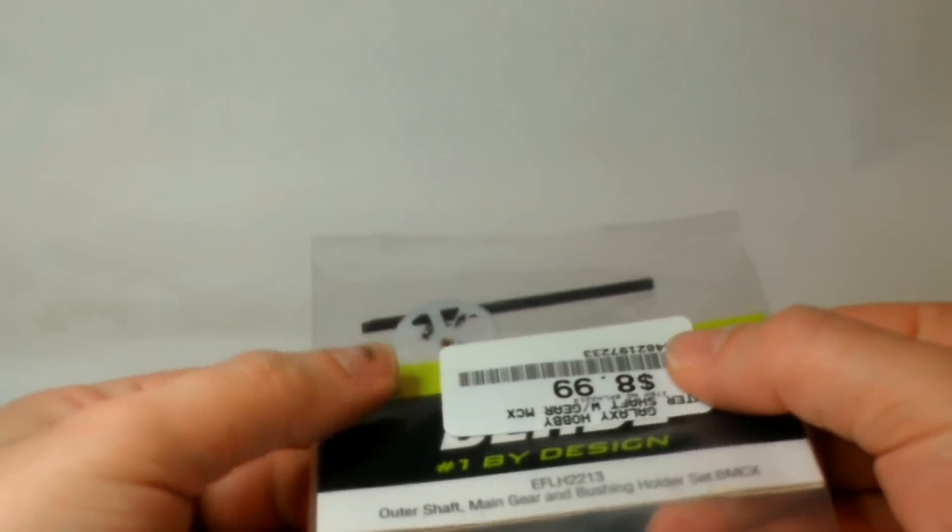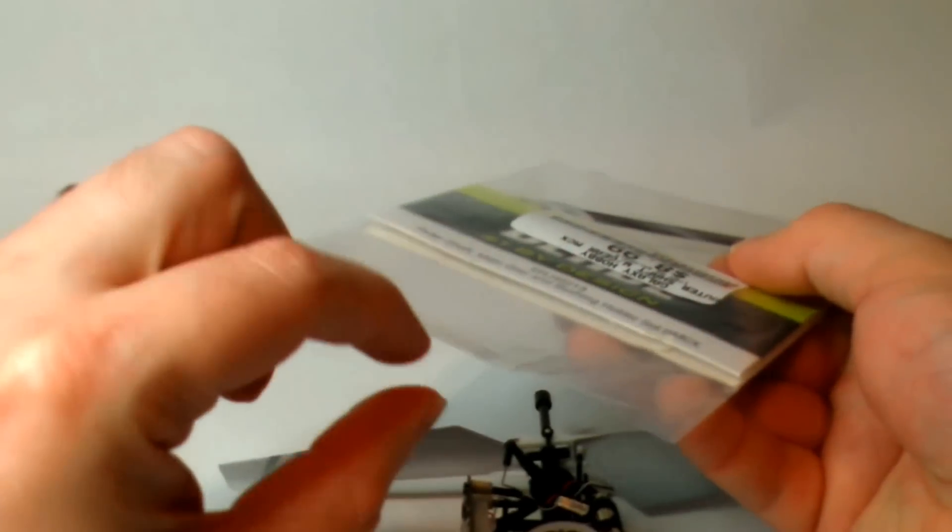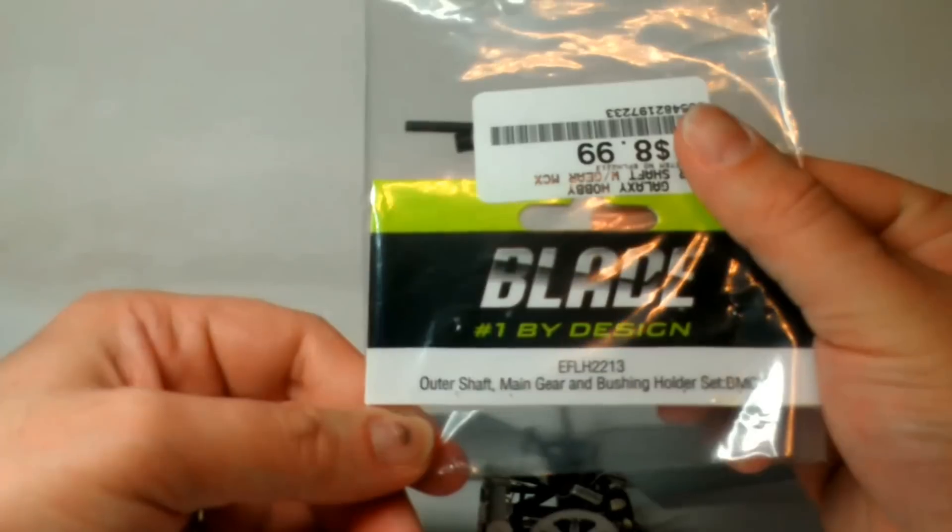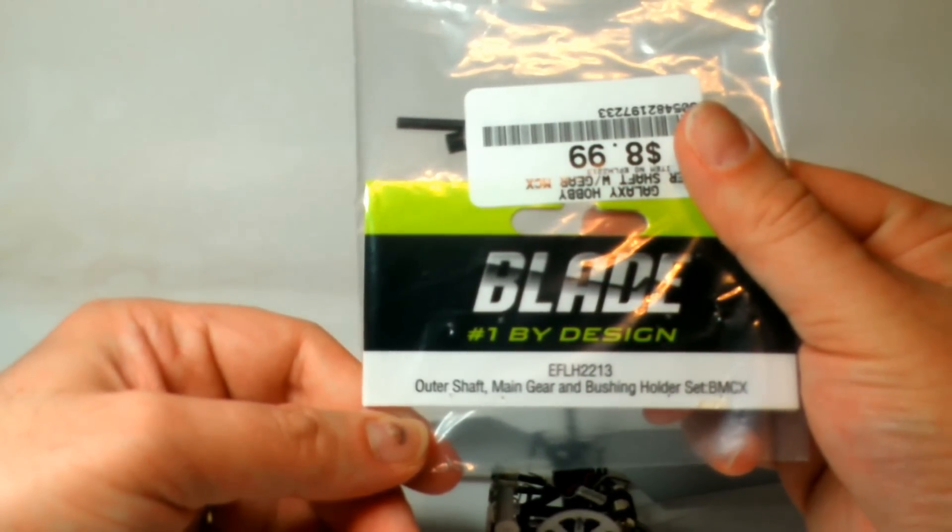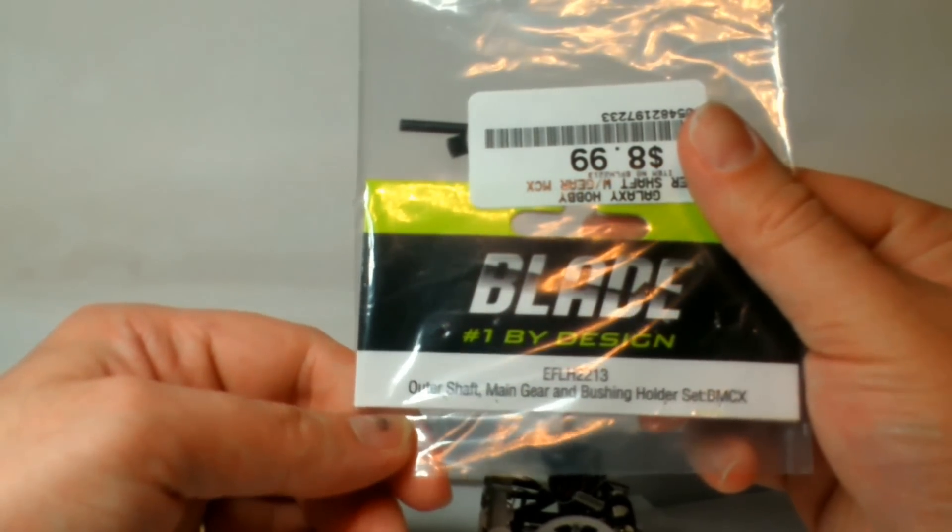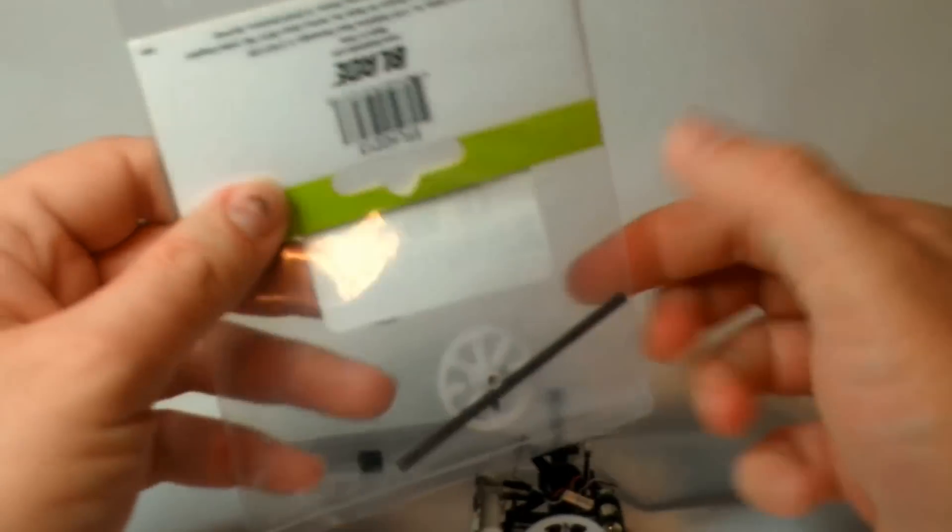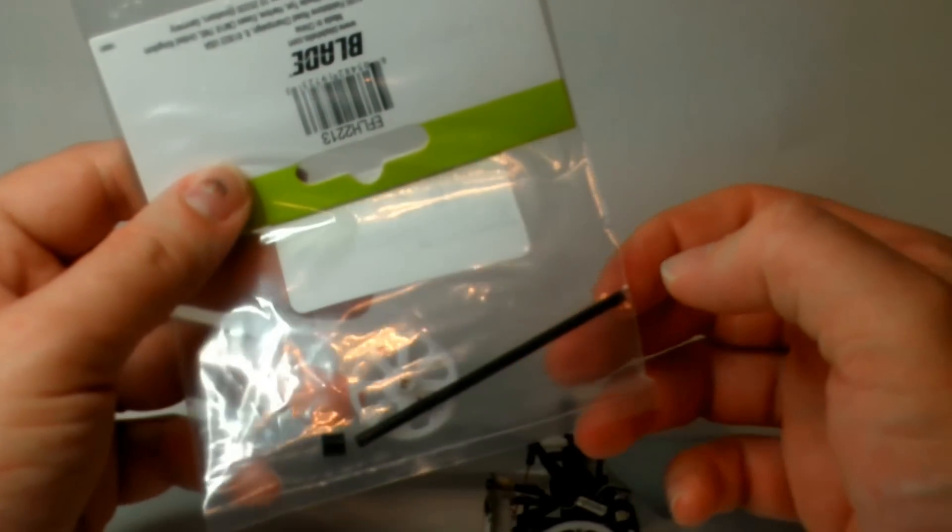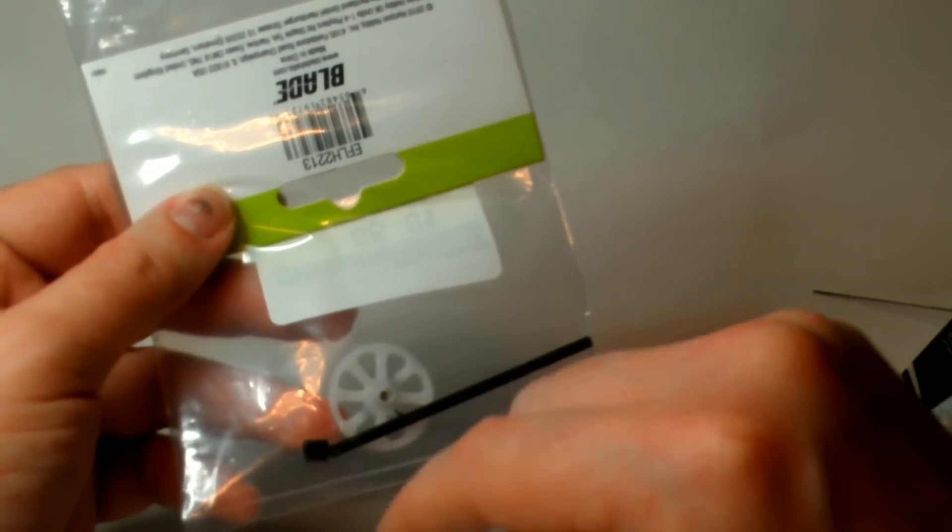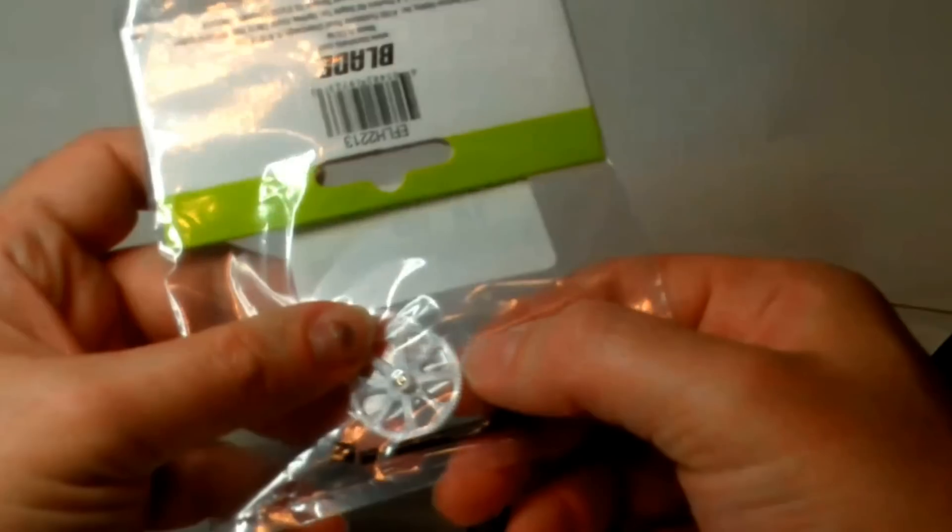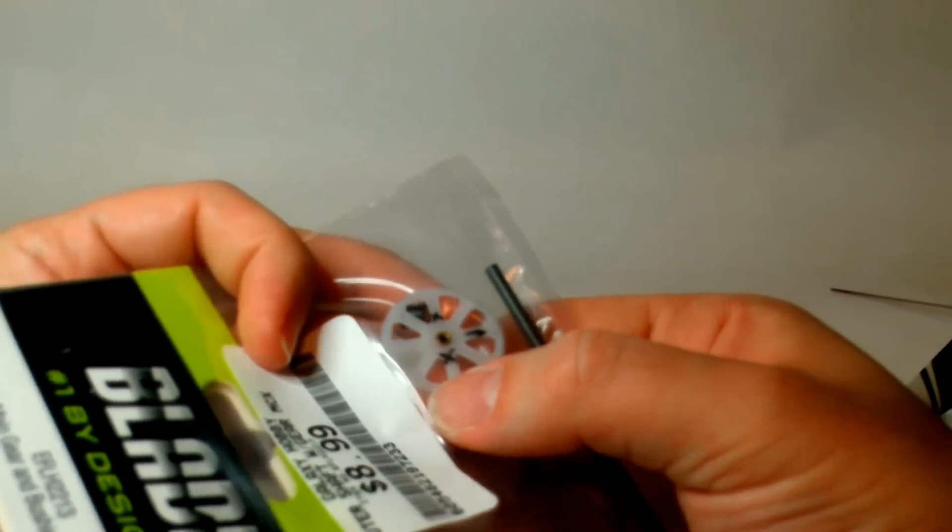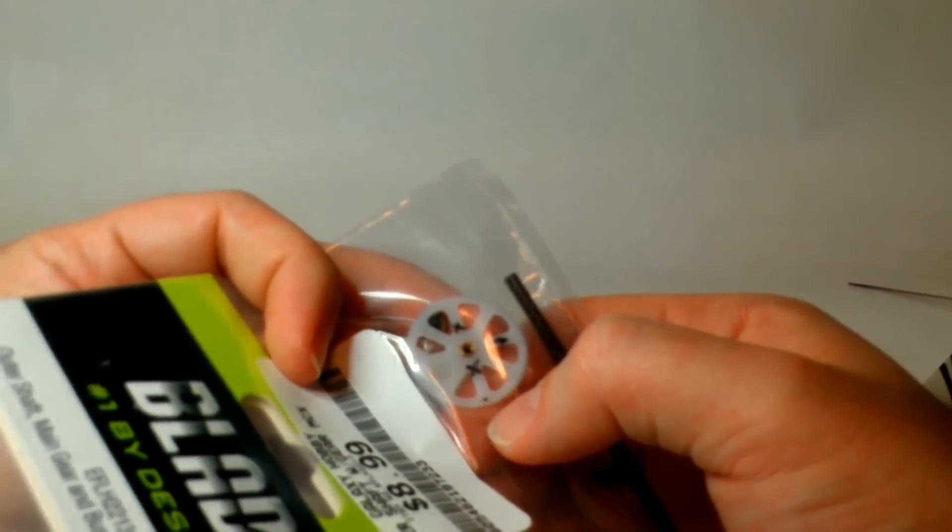If you need to do this, the replacement part set you want is replacement parts obviously by Blade themselves, is the EFLH-2213 outer shaft, main gear, and bushing holder set. For the BCMX, in my case, it's the MCX-2. It comes with a new, this particular set had more than I really needed. It has a new lower rotor shaft, a new upper bearing surface collar for the upper rotor, and then the gear that I needed. This one here is my old one. You can't even see the deformation, it was so small, but it was enough to make it run rough. The X is where I was trying to troubleshoot where that deformation was.